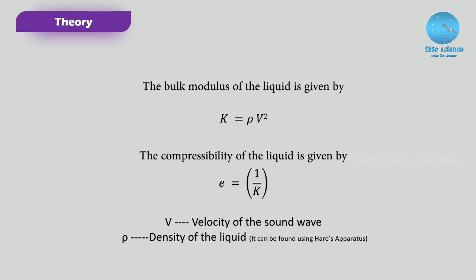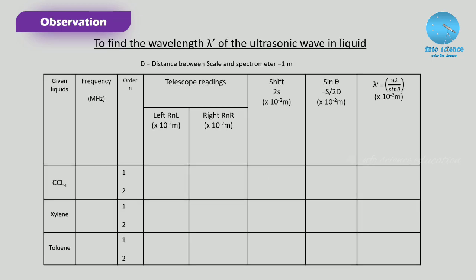Now we are moving to the observation table. The first column records which liquid we are using — in this video we are using CCl4 solution. The second column records the frequency of the oscillator in megahertz. The third column represents the order of the refraction pattern formed. Next columns record the left and right telescope readings. Then we record the shift 2s, from which we calculate sin θ = s / 2d, where s is the shift and d is the distance between the scale and the spectrometer. Finally, λ' = nλ / sin θ.